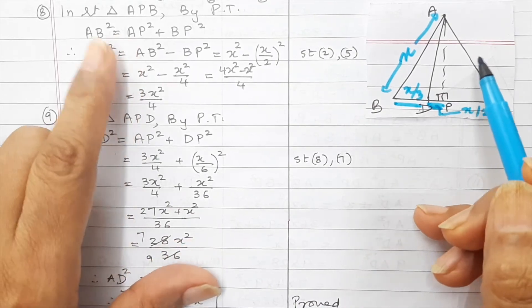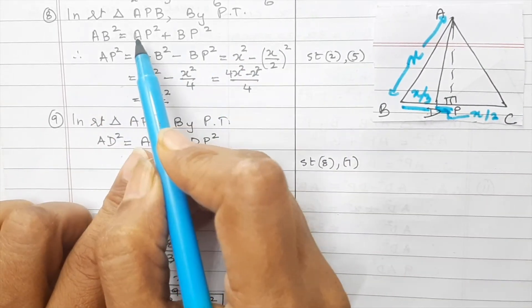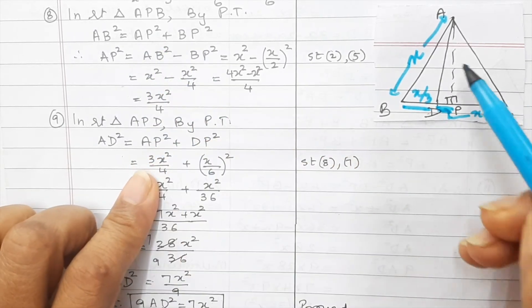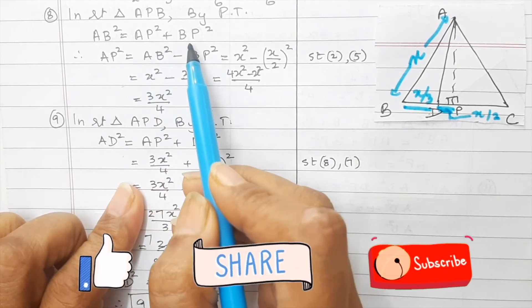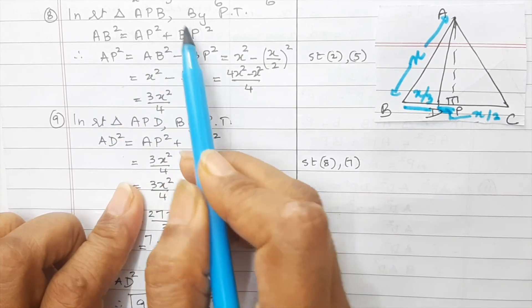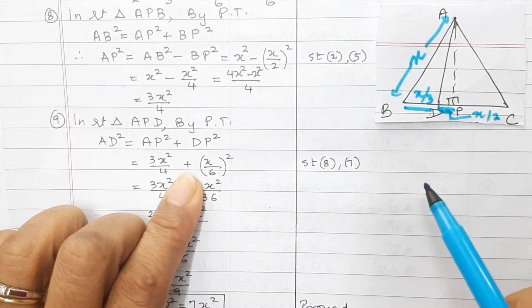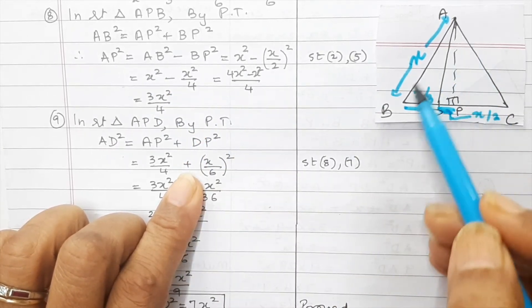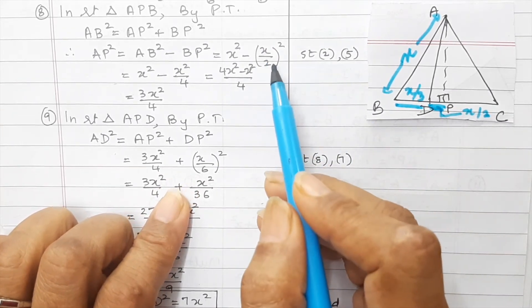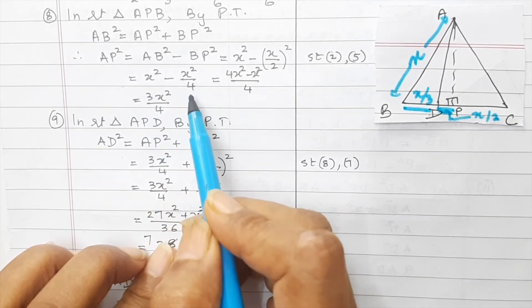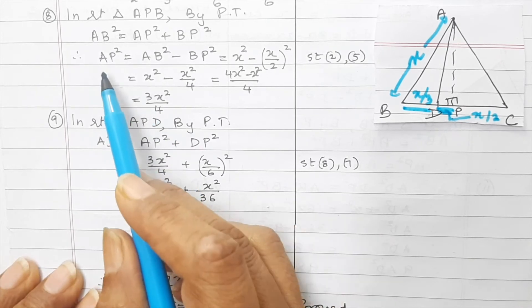So you will see in a triangle APB, your AB square will be equal to AP square plus BP square. So we write just that. Now in our proof, we want AD square. Now AD square will be obtained from this triangle. So I need to have the value of AP square. So I'm going to transfer BP square this side. So AP square is here and BP square goes that side. So it becomes AB square minus BP square. Now looking at the diagram, look at the value. Your AB, BC, AC is X. So your AB square becomes X square and BP square. And BP is this. Now BP is going to be half of BC. So that is X upon 2 whole square. Open this bracket. We will have X squared minus X squared upon 4. Take the LCM 4. And so this becomes 4X squared minus X squared. That is 3X squared upon 4. So we have the value of AP square.